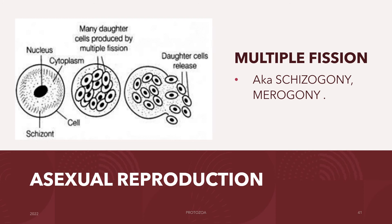Schizogony, also called multiple fission or merogony, is a process where the nucleus divides mitotically several times before the cytoplasm does. The dividing cell is known as the schizont, meront, or segmentor, and the daughter cells are called merozoites. This is a prolific type of asexual multiplication seen particularly in the Apicomplexa, including Eimeria, Toxoplasma, Sarcocystis, Cryptosporidium, Plasmodium, Haemoproteus, Babesia, Theileria, Cytauxzoon, and others.